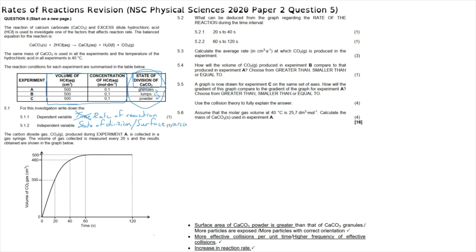Although not asked here, the control variables are the temperature of the hydrochloric acid and the mass of calcium carbonate — these are kept the same to ensure a fair experiment. The volume and concentration of HCl are also kept constant. Control variables are the things we must keep the same so that results only reflect what we have changed. The question then continues: carbon dioxide produced in experiment A is collected in a gas syringe, with volume measured every 20 seconds.